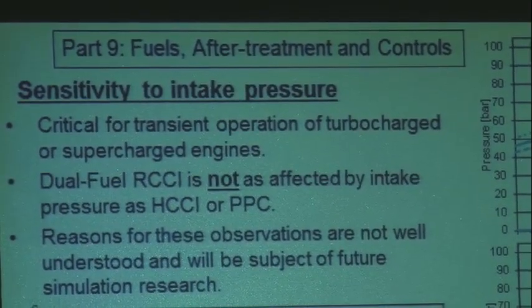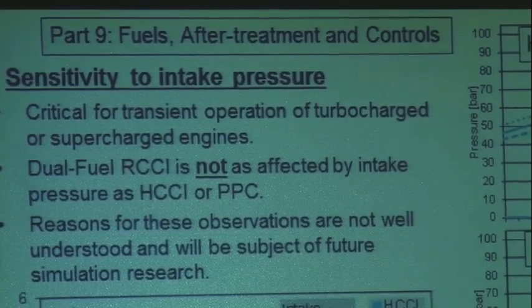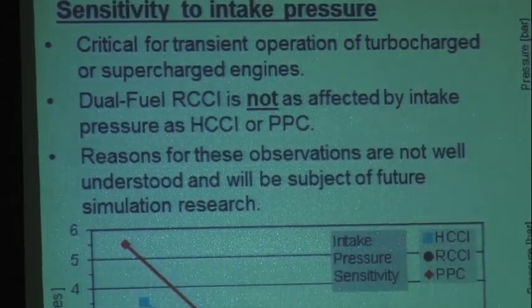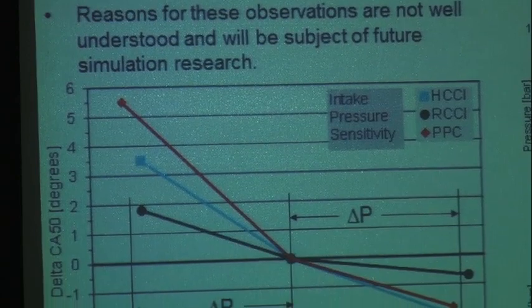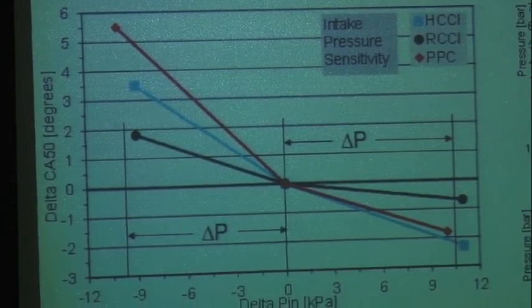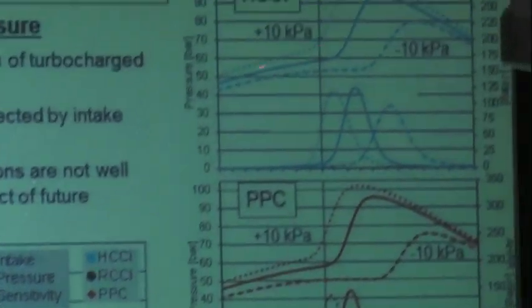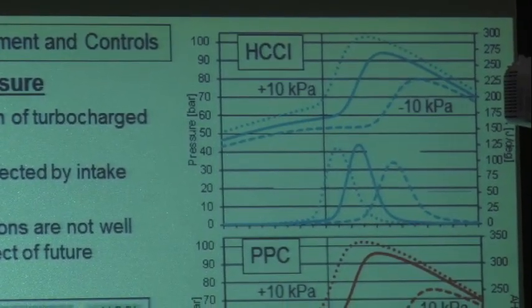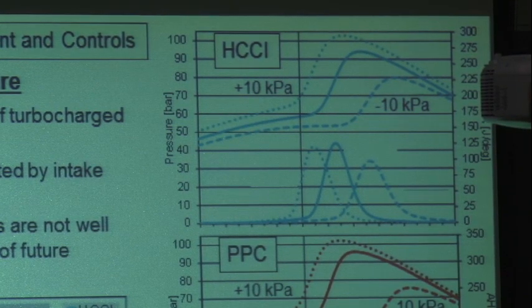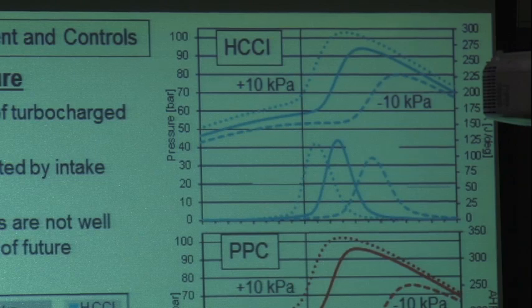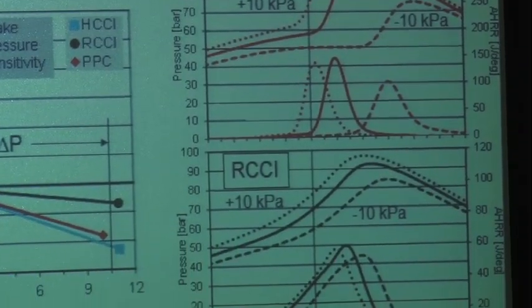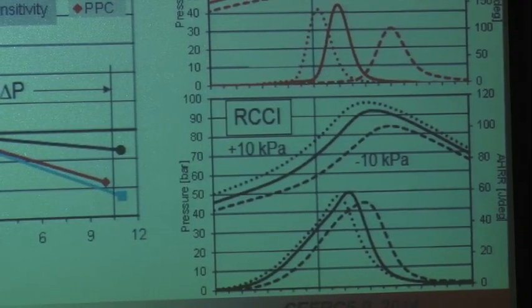These advanced combustion regimes are very sensitive to intake temperature, and to compensate for changes in temperature with a single fuel is actually very difficult. The same thing applies when you have intake pressure variations — and this is crucial for a transient engine. You put your foot on the gas pedal, the turbocharger takes a while to ramp up, so you'll have fluctuations in intake pressure. We looked at changing the intake pressure by 10 kPa, or 10%, plus or minus, for this close-to-naturally-aspirated case. There was no EGR in any of these experiments.